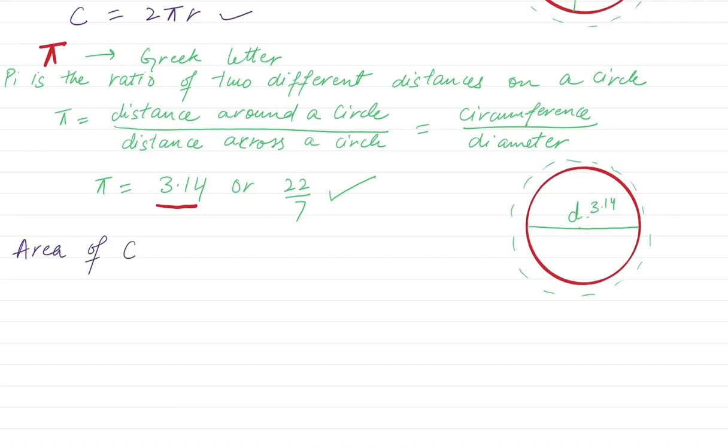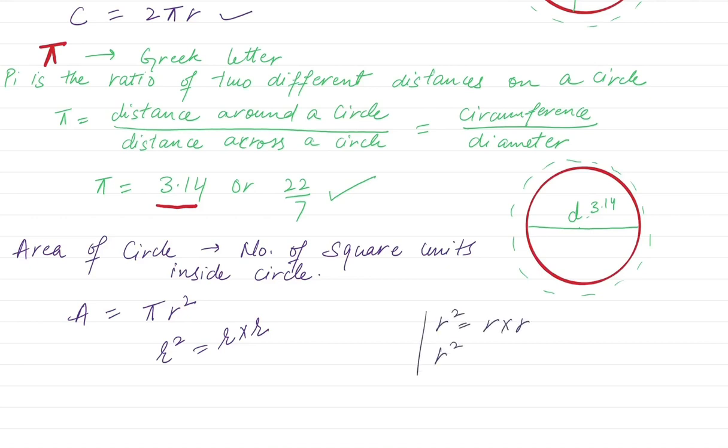Now what is the area of circle? We always ask, find the area, find the circumference. Area is the number of square units inside the circle, and the formula is π r square. Remember, r square is r times r. R square is r times r and never equals 2 times r. Many times we make this mistake, but remember it's r times r.